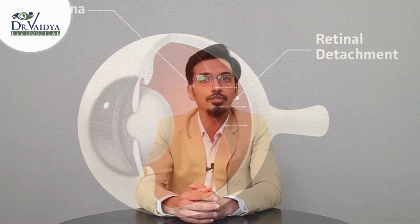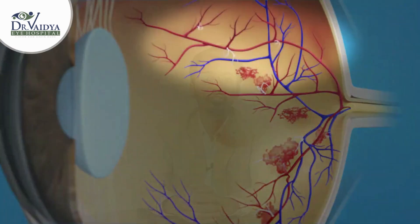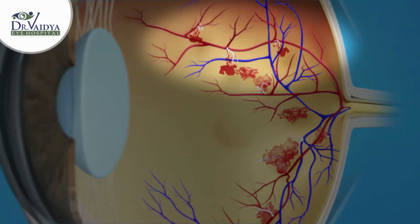In that case, you need to consult a doctor immediately, as this could be an early sign of retinal detachment. Or, if you are a diabetic patient, floaters can often be seen in cases of diabetic retinopathy. In later stages, there can be bleeding inside the eye causing something called a vitreous hemorrhage.